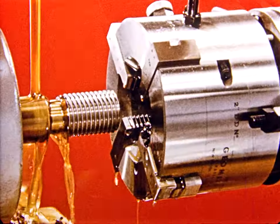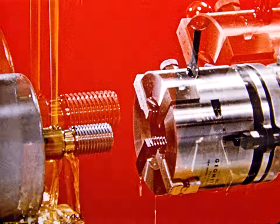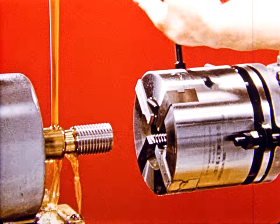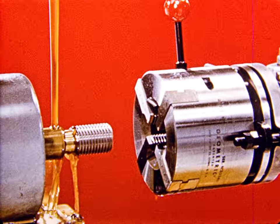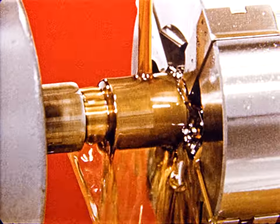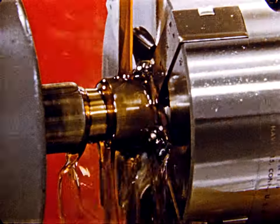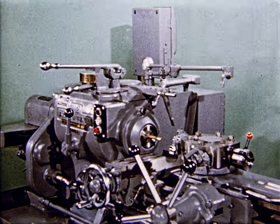When the chasers have disengaged the work, the operator returns the die head to its starting place. One simple movement of the closing handle brings the chasers back to the cutting position. Thus, in a matter of seconds, the die head has completed its cycle and is ready to thread another piece. So much for the ABCs of die head operation.